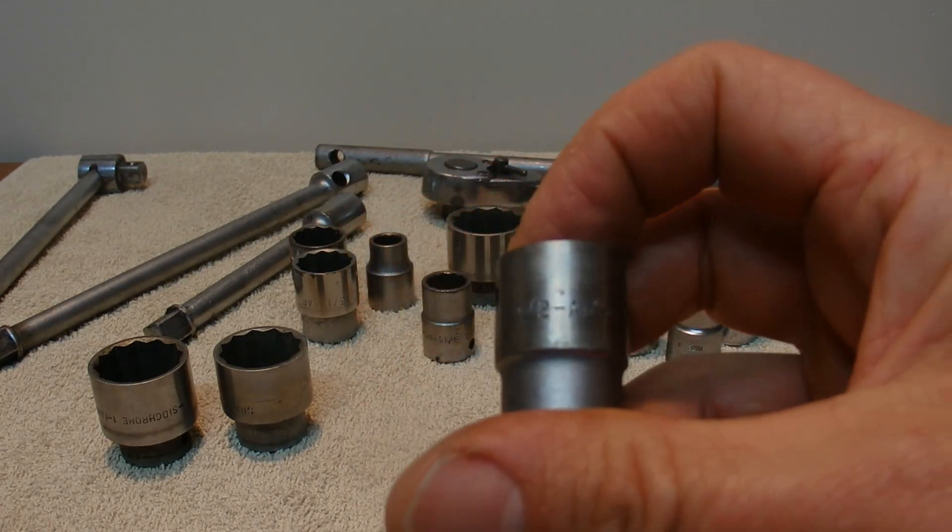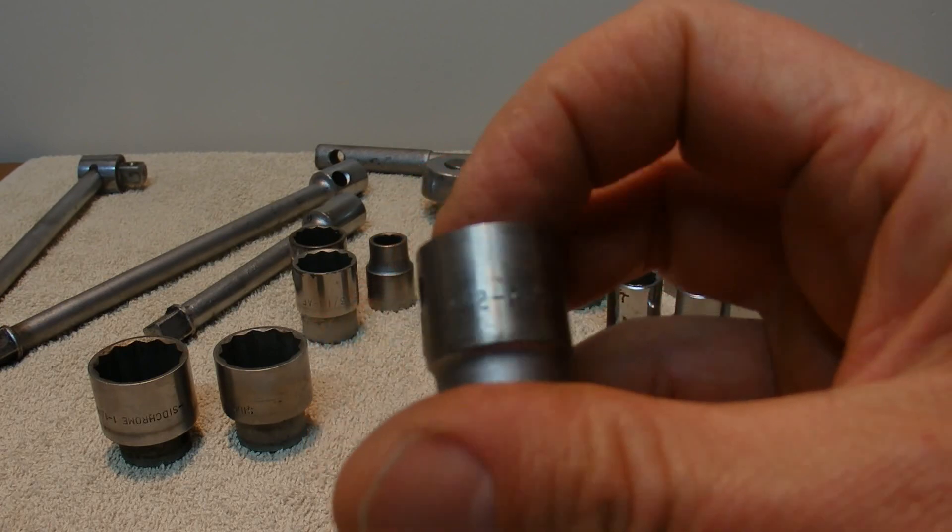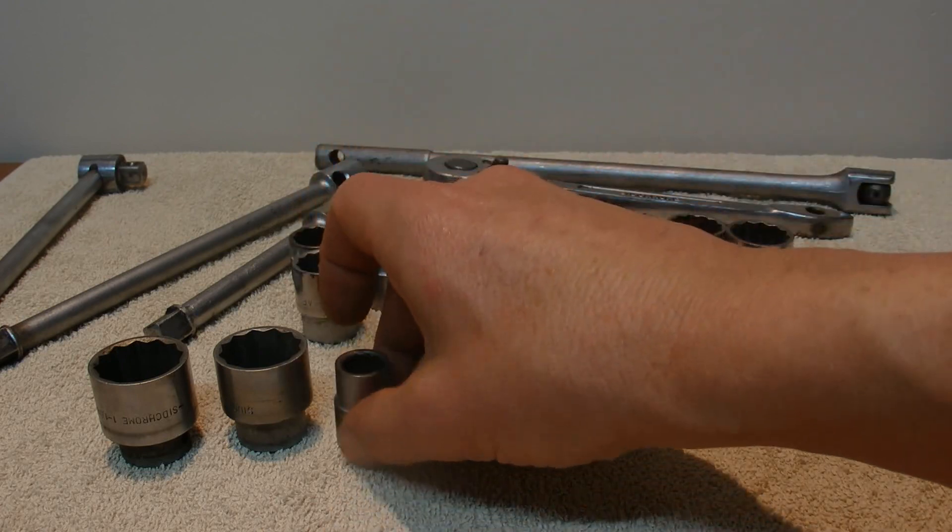That was an imperial measurement, 1 and 1 sixteenth of an inch. So I put that over here to one side. And the next socket I've picked up. Also Sidchrome. And these are all made in Australia. This is one inch imperial and AF for across face.